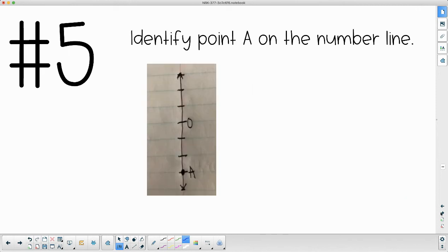Number five asks you to identify point A on the number line. Here's zero, we know these are our positive numbers and our negative numbers. We can see this goes down one, two, three—it's negative three.